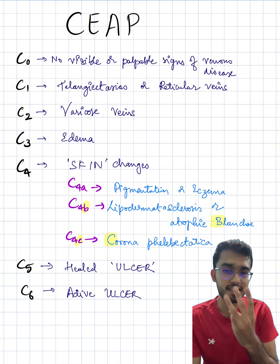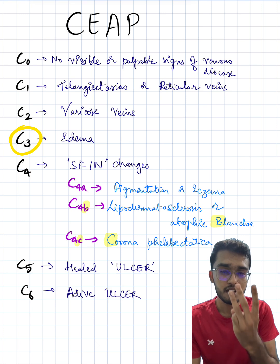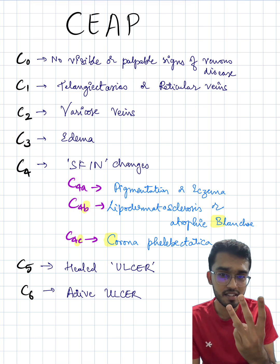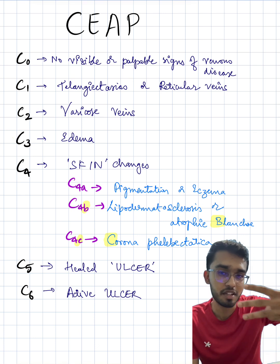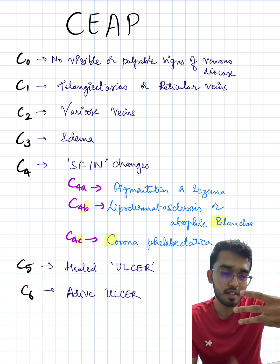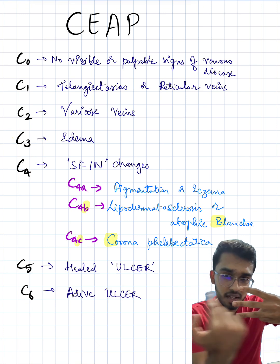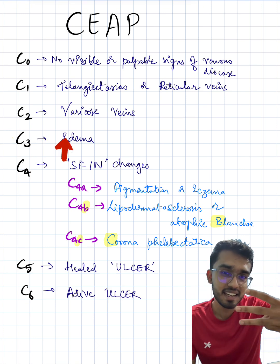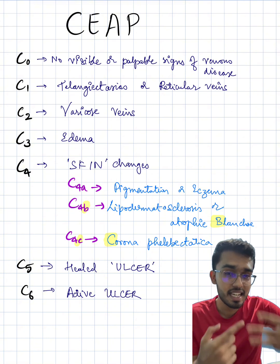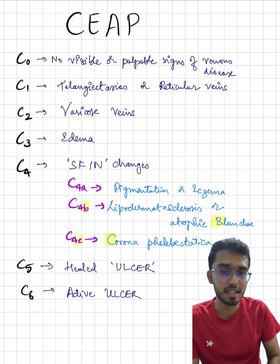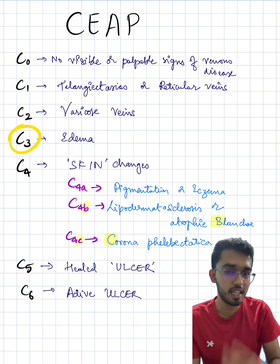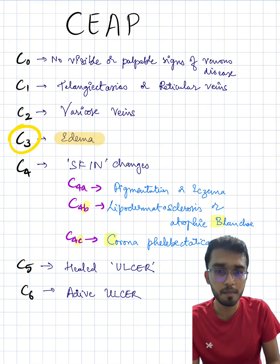Moving on to Class 3. Show three fingers in a horizontal way — doesn't this look like the letter E? And E stands for edema. So in Class 3 of CEAP, we have edema.